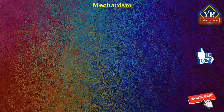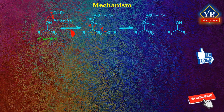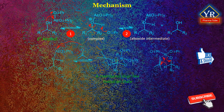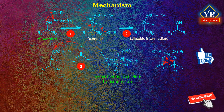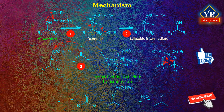Mechanism of Oppenauer Oxidation Reaction. In the first step of this mechanism, the alcohol coordinates to the aluminum to form a complex, which then in the second step gets deprotonated by an alkoxide ion to generate an alkoxide intermediate. In the third step, both the oxidant acetone and the substrate alcohol are bound to the aluminum. The acetone is coordinated to the aluminum, which activates it for the hydride transfer from the alkoxide. The aluminum-catalyzed hydride shift from the alpha carbon of the alcohol to the carbonyl carbon of acetone proceeds over a six-membered transition state.